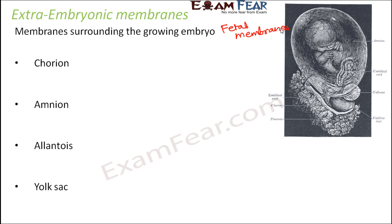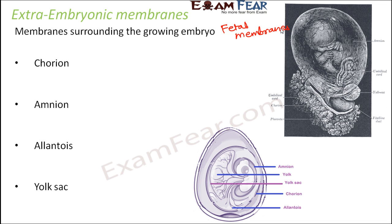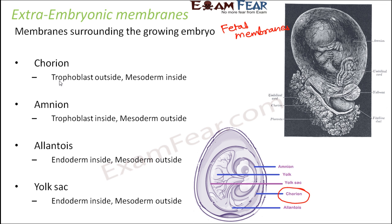Let's first talk about chorion. Looking at the diagram, you can see the growing embryo and how each layer surrounds it. Chorion is a membrane which completely surrounds the embryo — from all sides — forming the outermost layer.